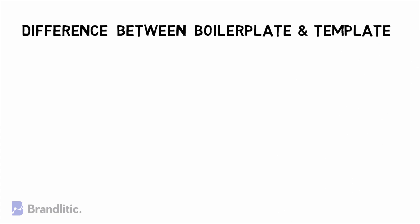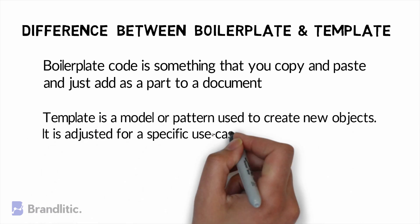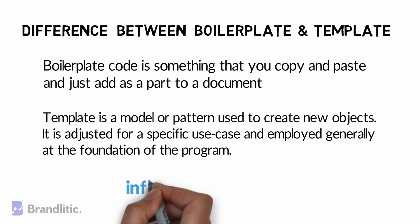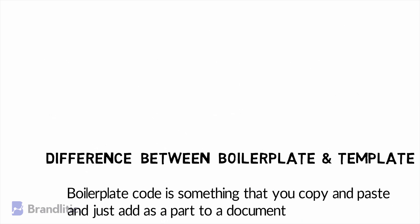You might be thinking now, isn't that something we call a template? Well, there's a difference between a boilerplate and a template. Boilerplate code is something that you can copy and paste and add as a part to a document. On the contrary, a template is a model or pattern used to create new objects. A template is adjusted for a specific use case and employed generally at the foundation of the program. Both template and boilerplate can make the program inflated and artificial if used unwisely.